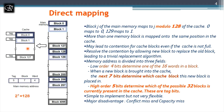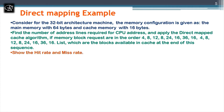However, direct mapping has a major disadvantage: it suffers from conflict miss or capacity miss. Even if there are empty spaces in the cache, it always targets one specific block, leaving other cache blocks unused. We'll illustrate this with an example.